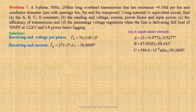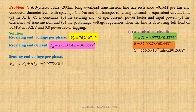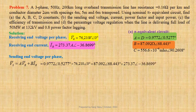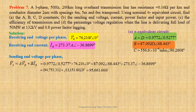Taking receiving end voltage per phase as reference, VR equals to 76,210 volts at angle 0°, and IR equals to 273.37 A at angle −36.8699°. Now we shall compute sending end voltage per phase: VS equals to A × VR + B × IR. Using values: 0.9772 at angle 0.5277° × 76,210 at angle 0° plus 87.092 at angle 68.443° × 273.37 at angle −36.8699°. That gives us 94,753.312 + j13,151.602 volts, or in polar form 95,661.668 volts at angle 7.902°.